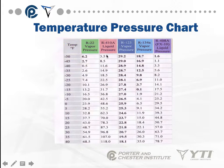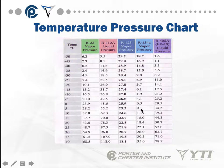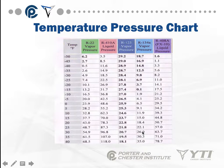R410A, found in most residential air conditioning systems, has a boiling point at 0 PSI somewhere around negative 50 degrees or lower. Every refrigerant has a slightly different boiling point temperature. To use the temperature pressure chart: find the refrigerant column, find the pressure you're looking at and cross-reference to find the temperature — or find the temperature you want and cross-reference to find the pressure needed to achieve it.